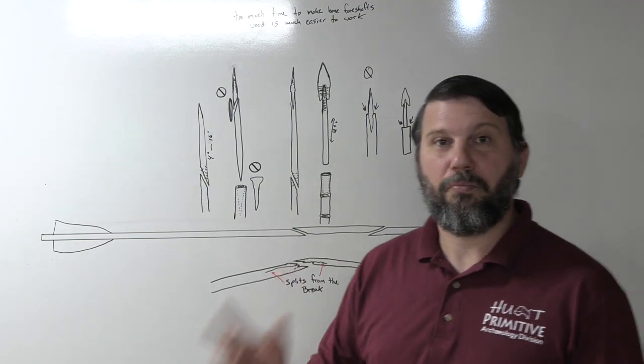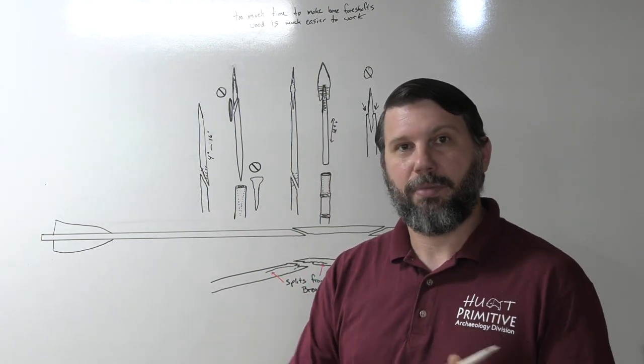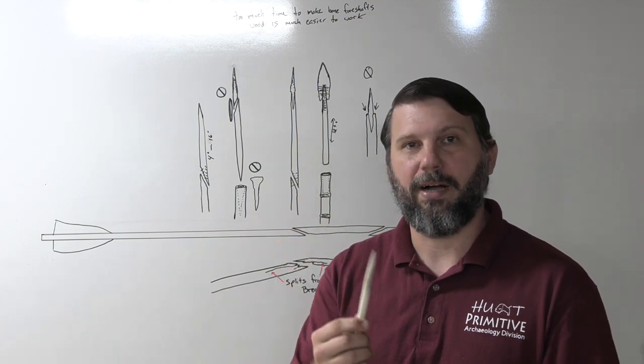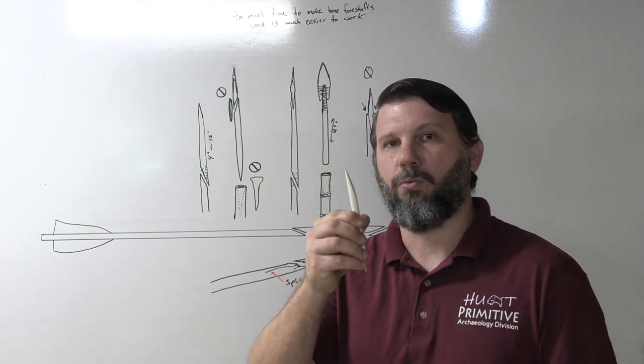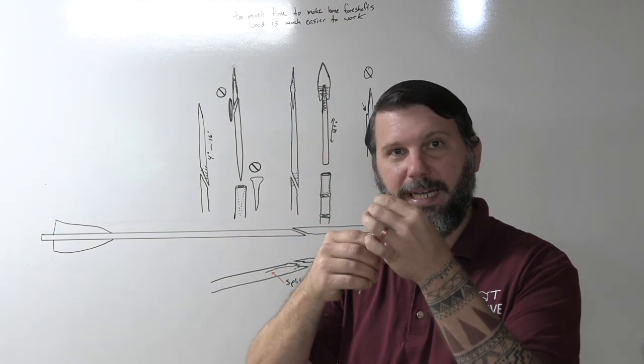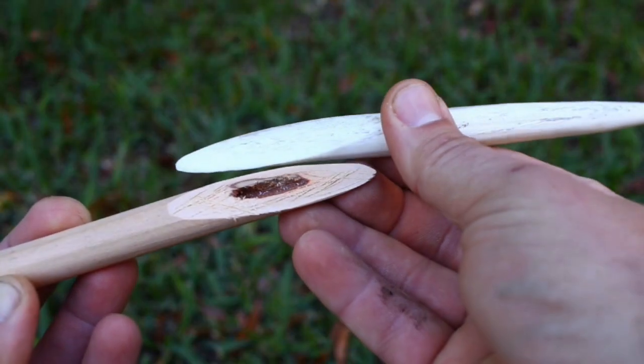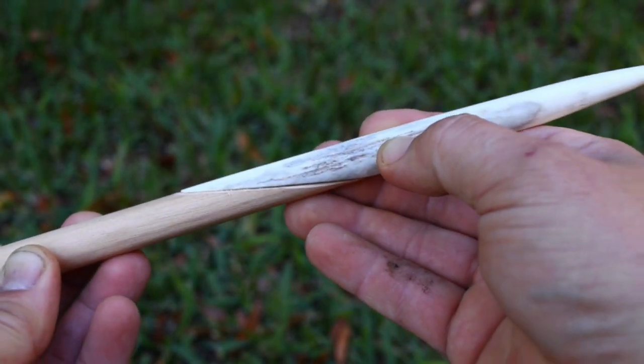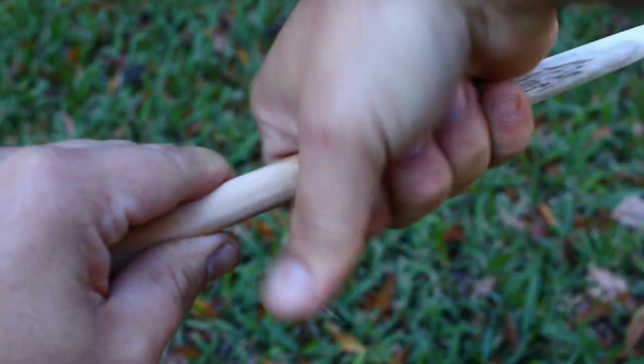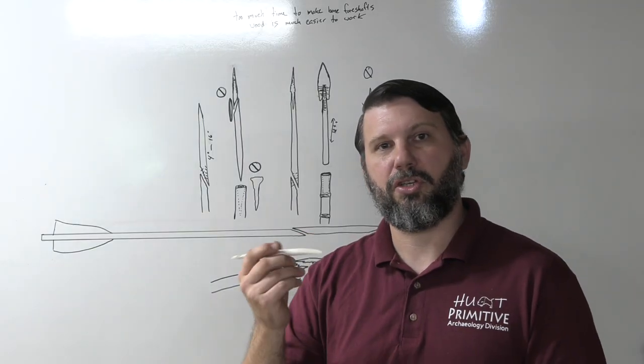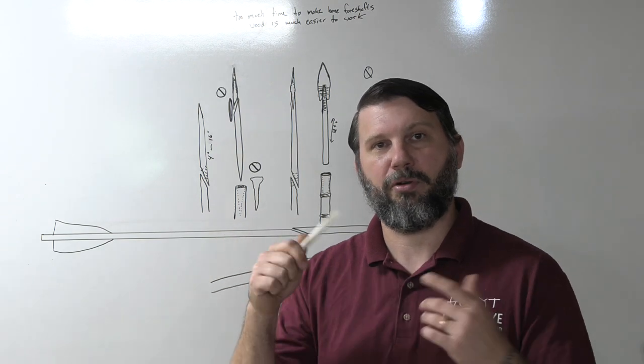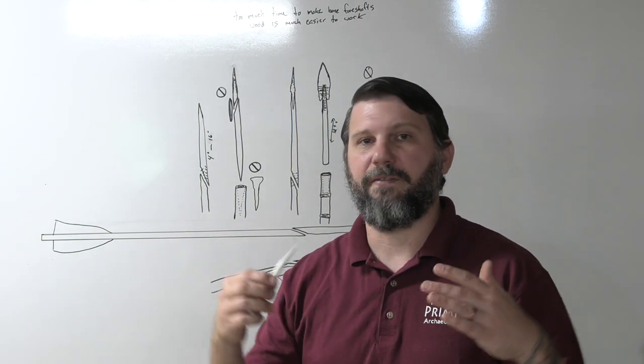So moving on now to the single beveled and pointed antler, bone, ivory points just like this. I absolutely believe that these are a projectile point. They are single beveled on one side which lends itself, and they're actually scored as well typically all the way around to give a good mating surface. When you attach these to a foreshaft or a spear shaft with this lap jointed system.